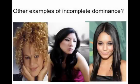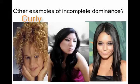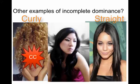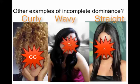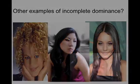An example of incomplete dominance in humans is hair texture. The two extremes are curly hair and straight hair. The homozygous dominant would be curly, homozygous recessive would be straight, and the heterozygote will actually have an intermediate between curly and straight, which is wavy. That's a real life example in humans of incomplete dominance.